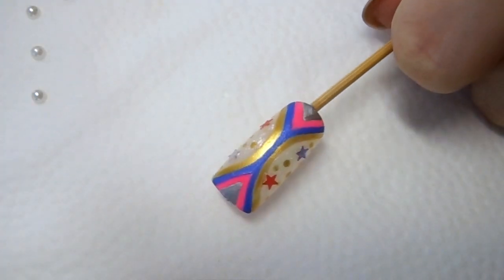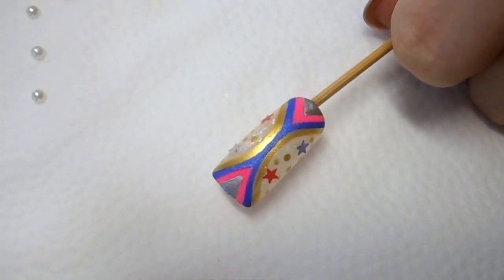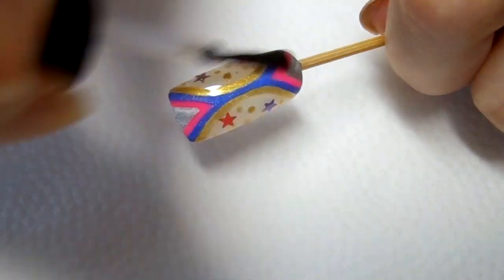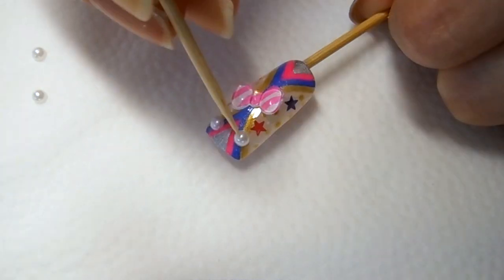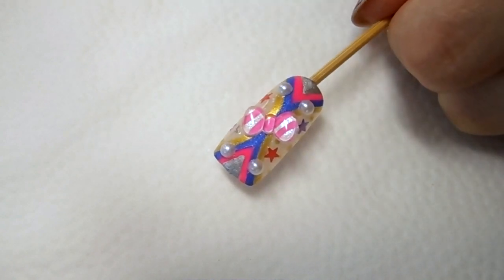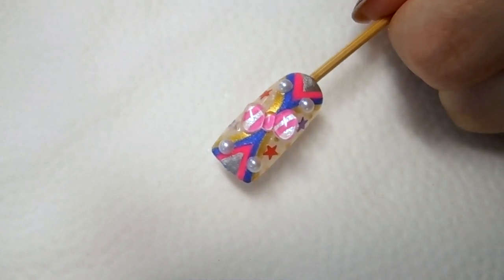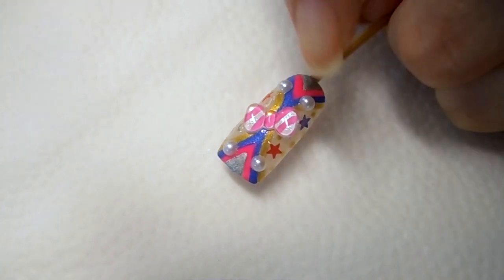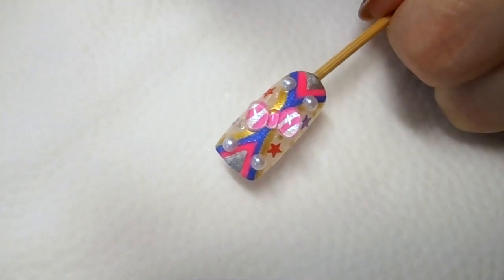Now I am going to top coat and also add our decorations. So that is pretty much the design and I don't have clear acrylic. If I do, I will put it underneath the bow so that it will last a lot longer.